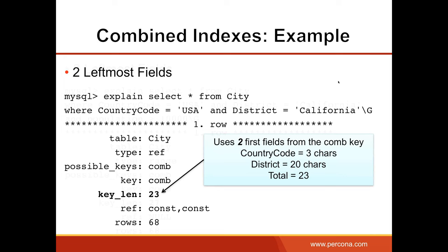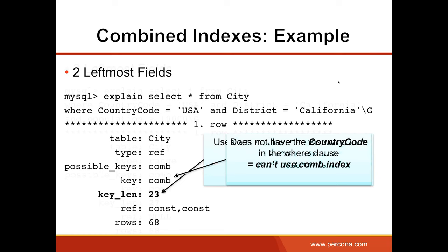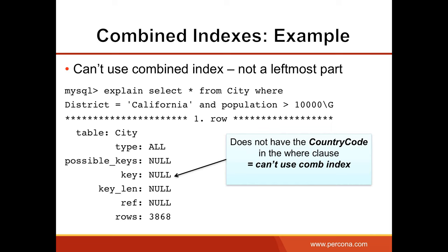Now, MySQL can use only the leftmost part of a combined index. If we select from city WHERE district = 'California' AND population > 10000 — not starting with country_code — MySQL will not be able to use our combined index and will have to perform a full table scan. It's very important to ensure that all queries using a combined index start with the leftmost part of that index.